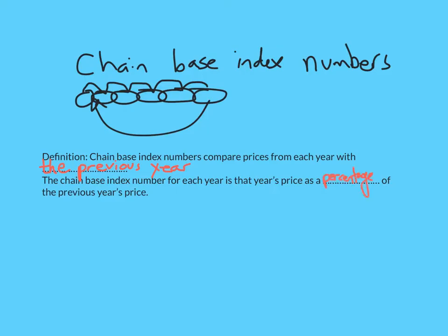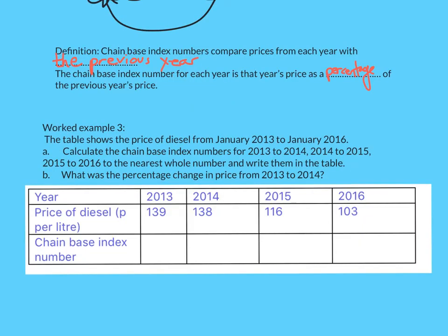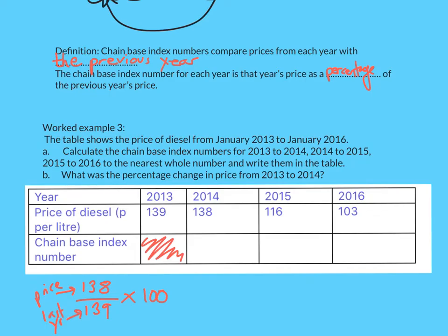Let's look at an example. We're looking at diesel prices over 2013, 2014, 2015, and 2016. We want the chain base index numbers — each one related to the previous year. Because we have no data for 2012, there is no chain base for 2013. For 2014, the new price is 138 and last year it was 139, so it's 138 divided by 139 times 100. To the nearest whole number, that's 99 — which makes sense as it's only a tiny bit different but has decreased, so it's less than 100.